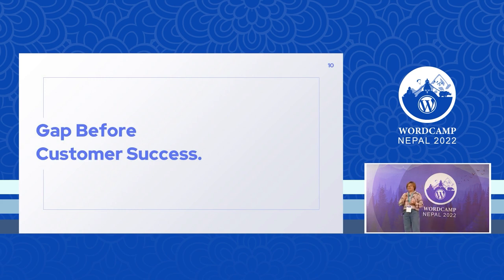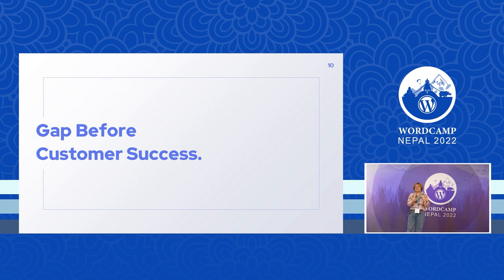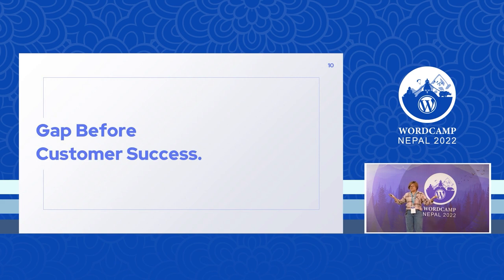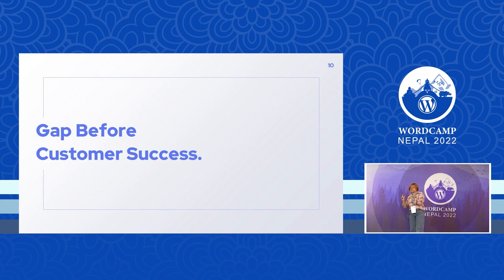Success gap is the gap before customer success. In the term 'success gap' you don't see the word 'customer', but that is the main hidden agenda here. When you have a great product and business goals to grow, expand, earn more revenue, and sell more — to achieve that, you should first make your customers successful in relation to your product.